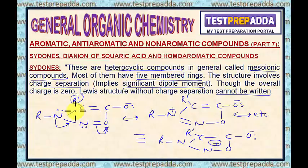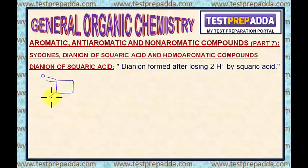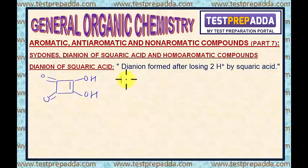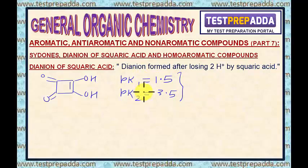Now I will talk about the di-anion of squaric acid. First of all, what is squaric acid? Let me write this structure. This is squaric acid. The pKa1 of this squaric acid is 1.5 — you can see two hydrogen atoms are attached here. And pKa2 for this squaric acid is 3.5.